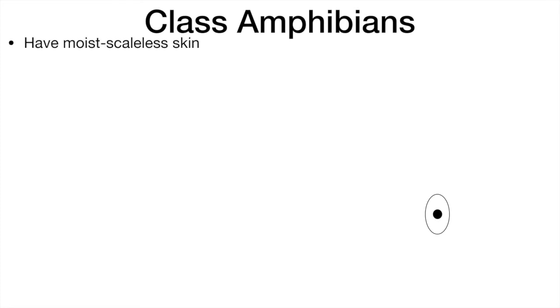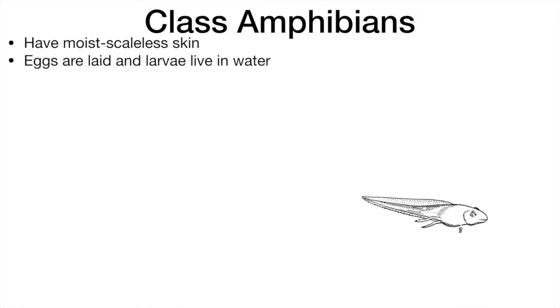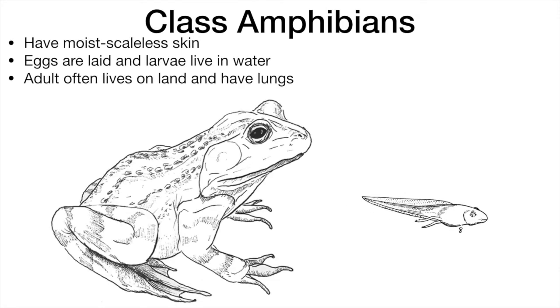Amphibians have moist, scaleless skins. Their eggs are laid and larvae live in water. However, the adult often lives on land as they have lungs, compared to the larvae which have gills.